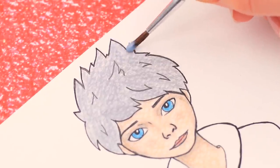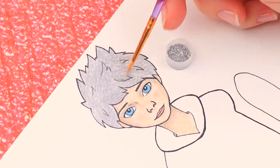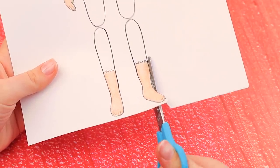Let's make Jack's hair nicer! Apply white glue to the hair and sprinkle it with glitter. Cut the doll out with scissors.